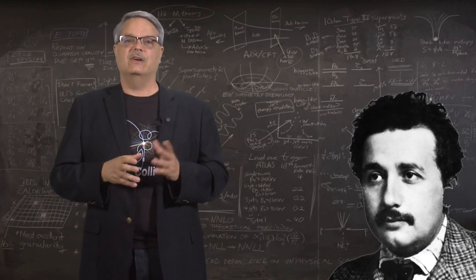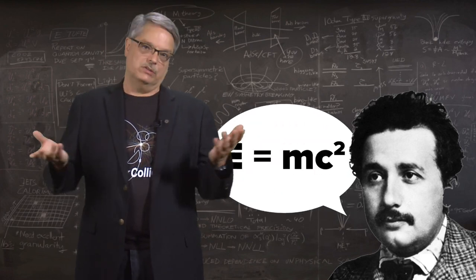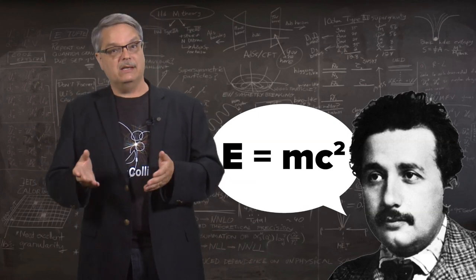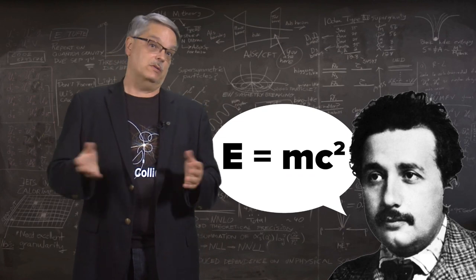Energy is useful because of Einstein's equation, E equals mc squared. C is just the speed of light, which is a constant, so that says that the energy is equal to mass times a constant. Consequently, more energy means that you can make a higher mass particle.